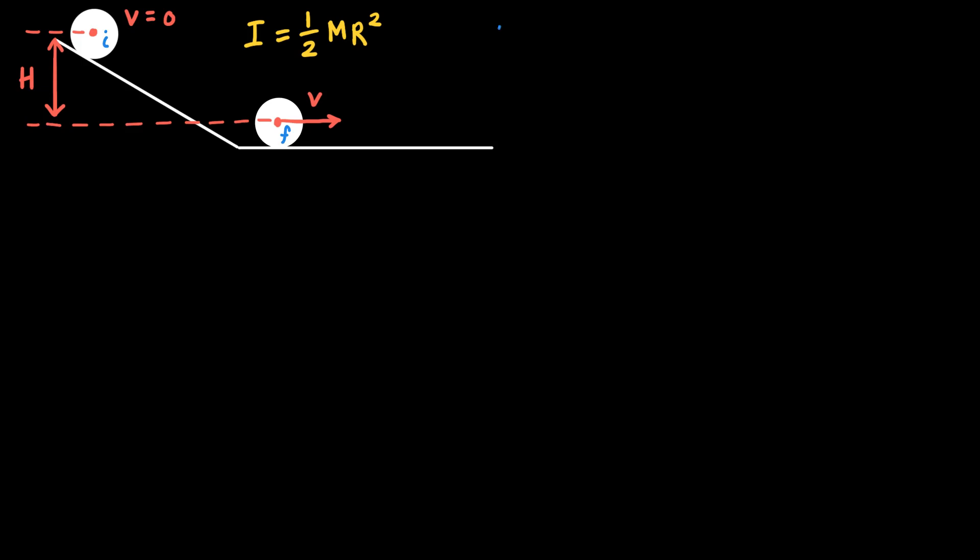So initially, the kinetic energy of the object will be equal to 0 because it's released from rest. It's not rotating, and it's not translating. If I define the height of this system to be 0 at this point when it's at the horizontal plane, then the center of mass of the object will be raised up a distance h above that point, and so initially it will have some gravitational potential energy. The amount of gravitational potential energy that it will have at the top of the plane is equal to m times g times that vertical distance h.